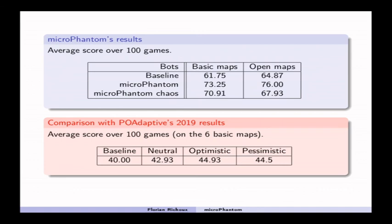I won't have time to explain what this situation is in this video, but everything is explained in the paper. I know it sounds a bit magic like that, but trust me, there is a clear explanation for that. And actually, without this very specific situation, we could expect a final score of 74 for microphantom on chaotic environments, which is more coherent with the small difference we observe on basic maps.